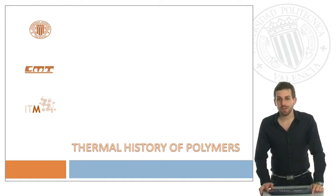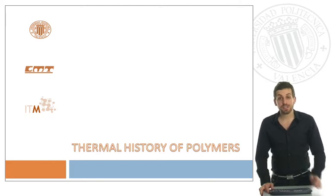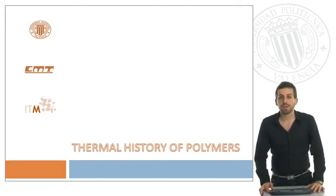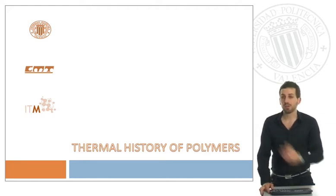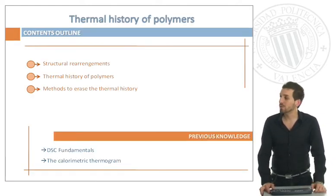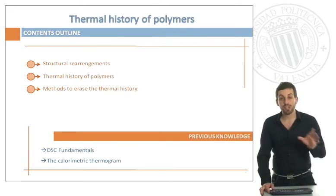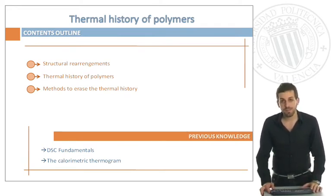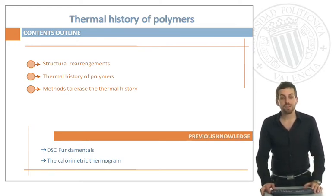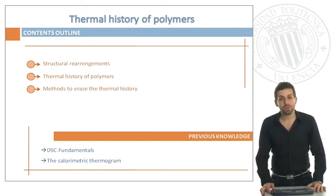Hi and welcome to this new module on differential scanning calorimetry. At the end of this presentation you will understand what is this phenomenon called thermal history in polymers. We will talk about different structural rearrangements that can be found in our polymers, then we will define what is this thermal history in polymers, and then we will see different methods that can be applied in case we want to erase this thermal history.